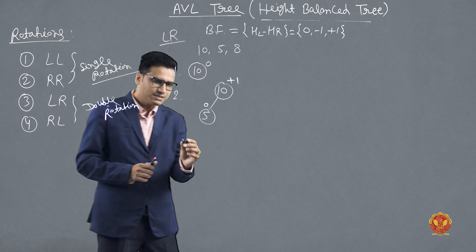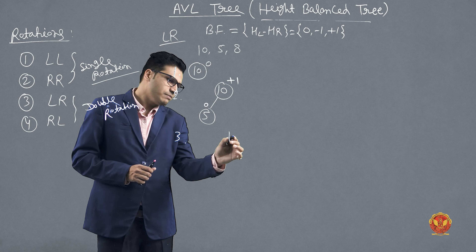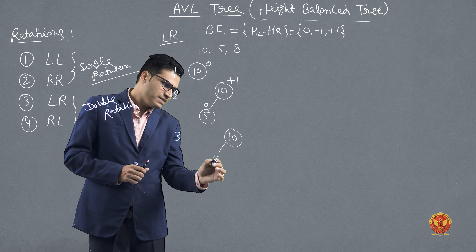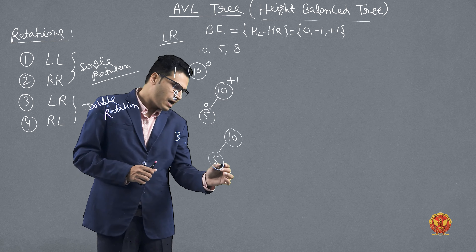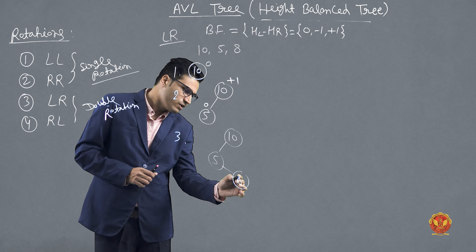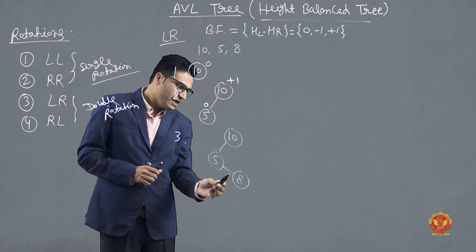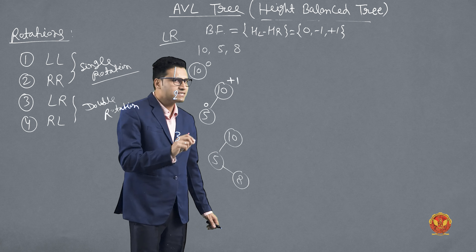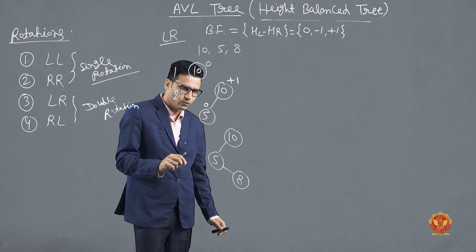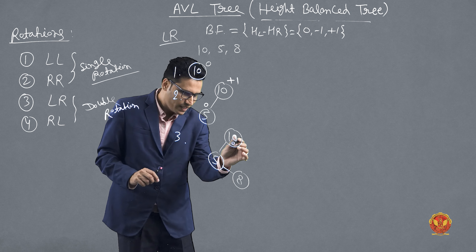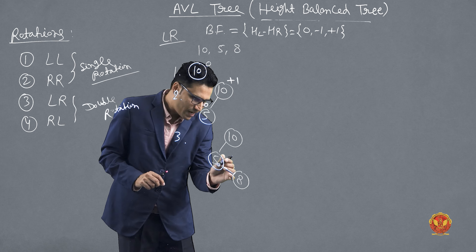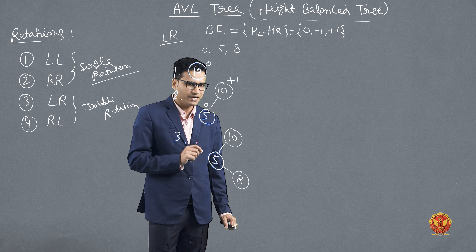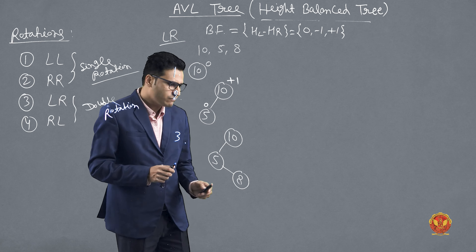Now insert the next element, 8. When I insert 8, where does it go? It goes to the right of 5, because 8 is greater than 5 and less than 10. We always start comparison from the root node. So from 10 we go left, and from 5 we go right — so 8 becomes the right child of 5.